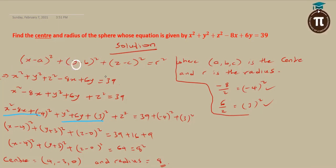If you compare with the general formula, minus a equals minus 4, so a is 4. Minus b equals 3, so b is minus 3. Then c is 0, and the radius is 8. Thank you very much.